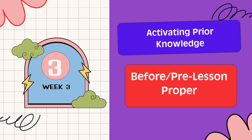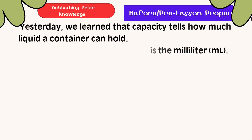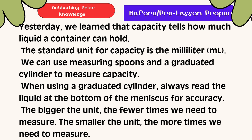Activating Prior Knowledge. Yesterday, we learned that capacity tells how much liquid a container can hold. The standard unit for capacity is the milliliter or mL. We can use measuring spoons and a graduated cylinder to measure capacity. When using a graduated cylinder, always read the liquid at the bottom of the meniscus for accuracy. The bigger the unit, the fewer times we need to measure. The smaller the unit, the more times we need to measure.